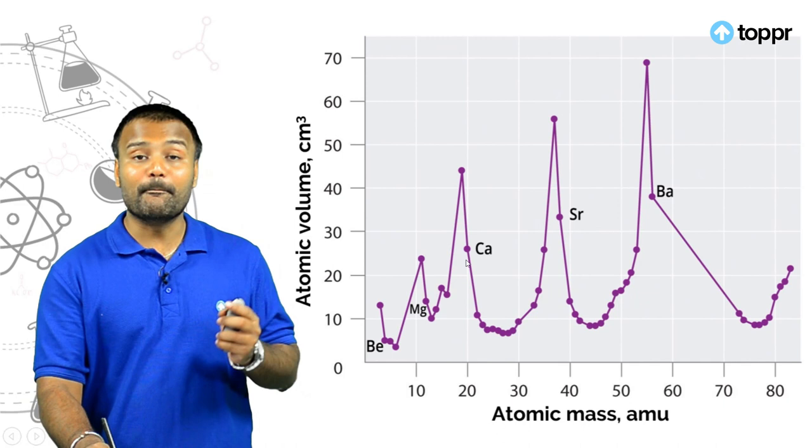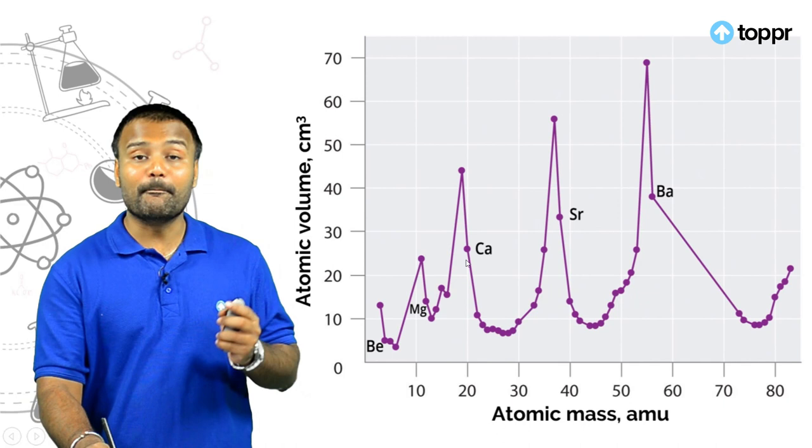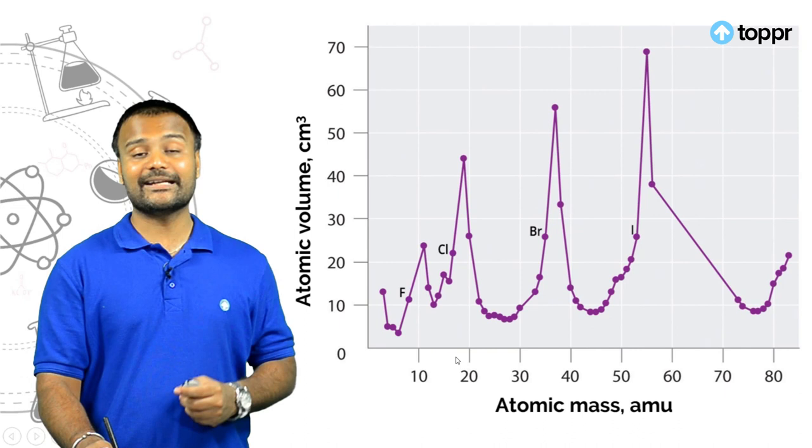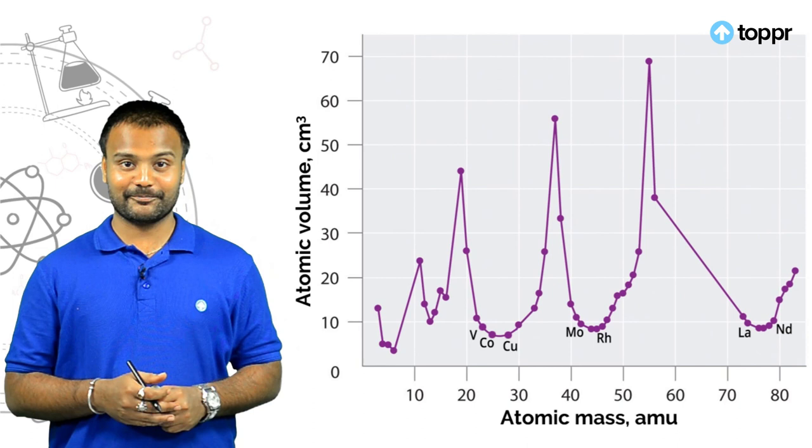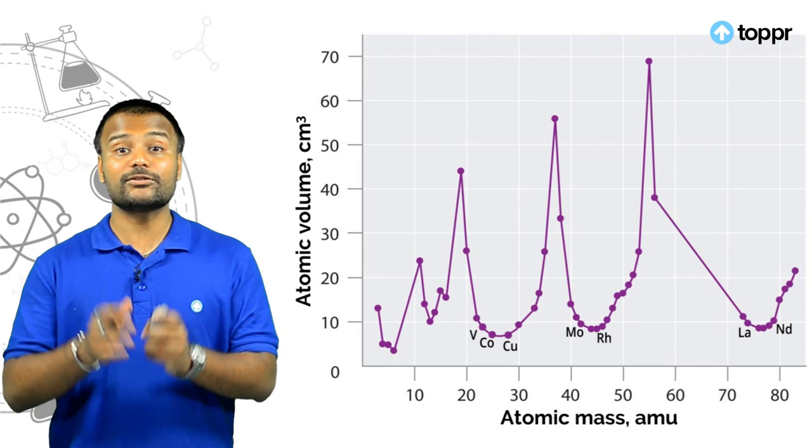Halogens occupy the ascending portions of the curve, and transition elements occupy the minima. Thus, elements with similar properties occupy similar positions on this atomic volume curve.